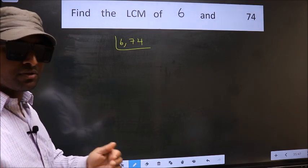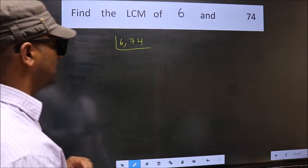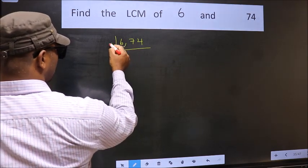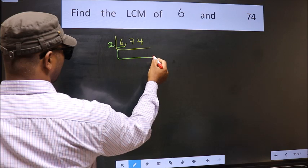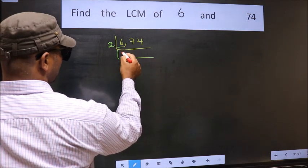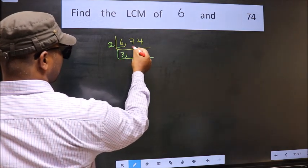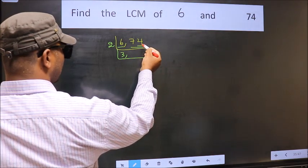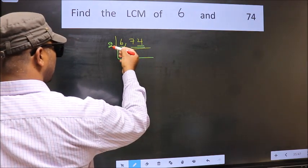Now you should focus on the first number which is 6 here. 6 is even so take 2. When do we get 6 in 2 table? 2 times 3 is 6. Now the other number 74, last digit 4, even, so this number is divisible by 2.